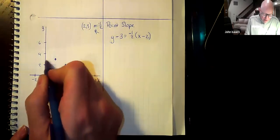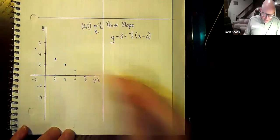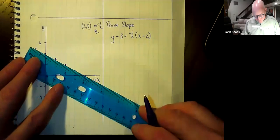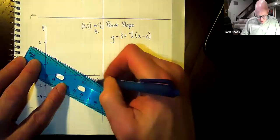I can also go to the left two spaces and up one, to the left two spaces and up one, and I can take a ruler out and draw a line through these points that continues on forever.